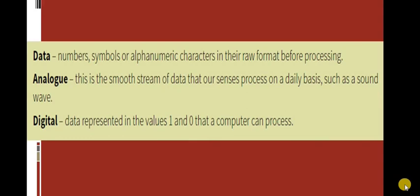Students should know three key terms in this lesson: the first one is data, the second one is analog, and the third one is digital. First, let us see what is meant by data. Data is nothing but raw facts and figures. Raw facts and figures can be in the form of numbers, symbols, or numerical characters.